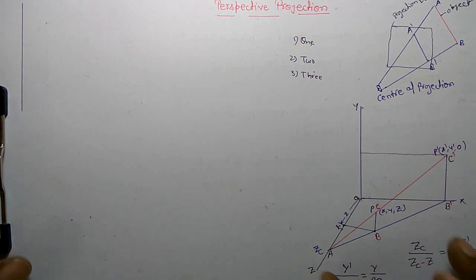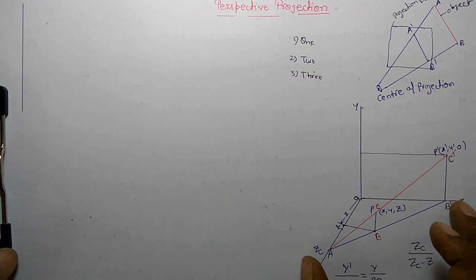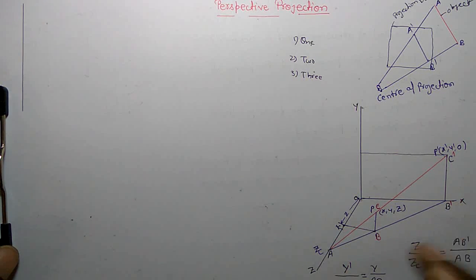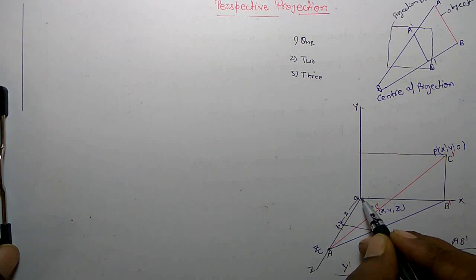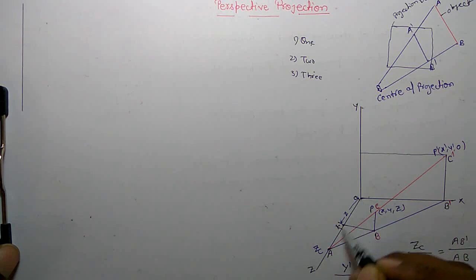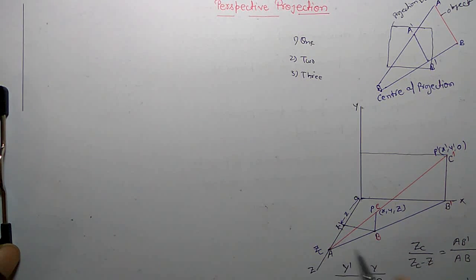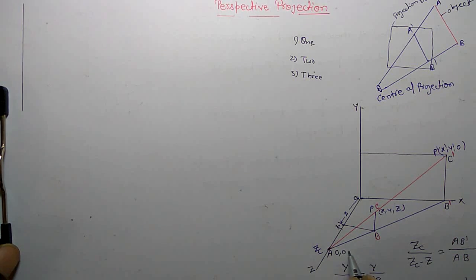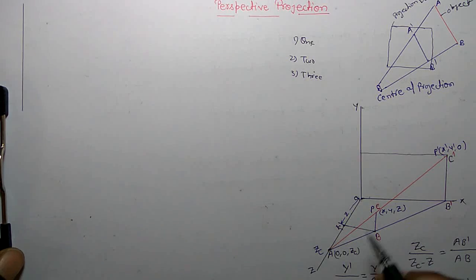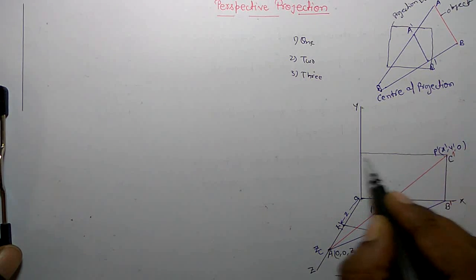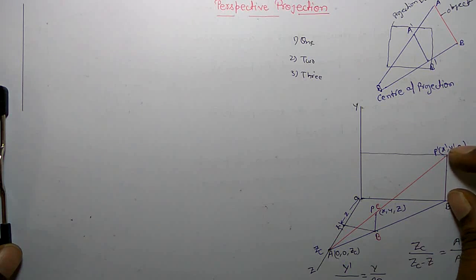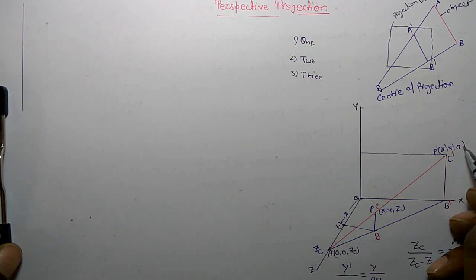I am going to first show you the single-point perspective projection. This is the center of projection, Z_C. Z_C is the distance. This is O, and the coordinates of A are (0, 0, Z_C). BC is the object projected on the x-y plane, so the projected coordinates are (x-dash, y-dash, 0), and I am going to find x-dash and y-dash.